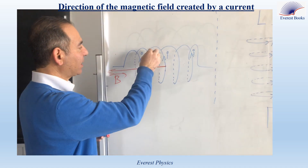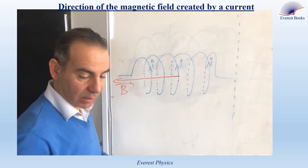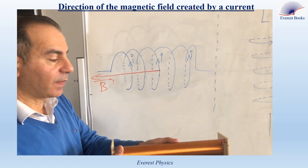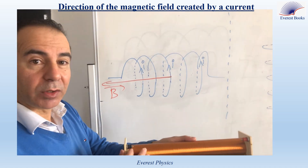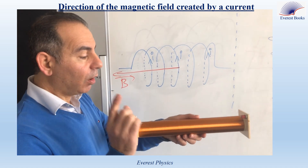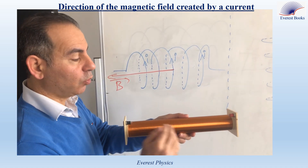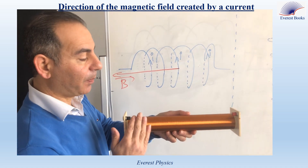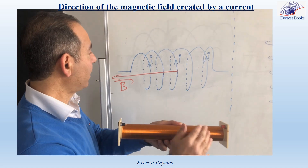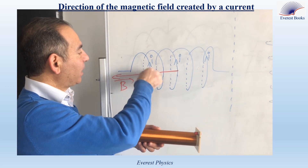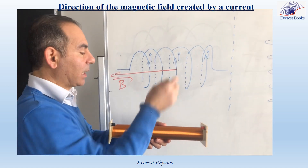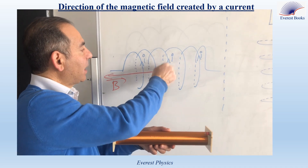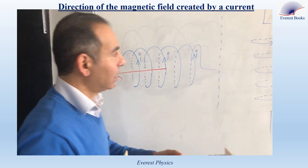What do we mean by the solid and the dashed lines? If you look directly at the solenoid, you can see only half of the loops, or only half of each loop. The parts of the loop that can be seen are represented by solid lines, and the other parts are represented by dashed lines.